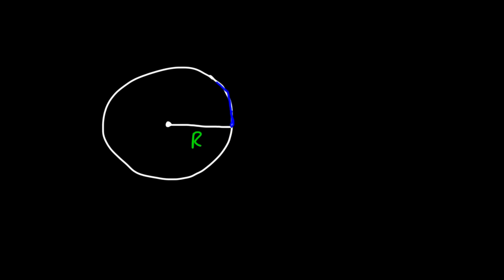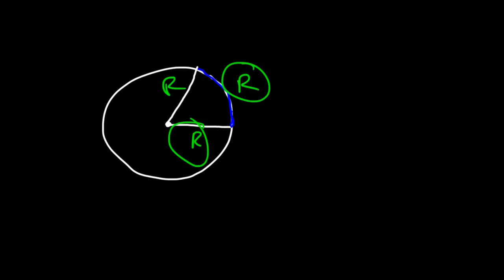The radius is the distance between the center of the circle and any point on the circle. Now if we draw the length of the radius as an arc, and that arc length is also equal to the radius, then the angle that forms is one radian. So this angle is one radian.